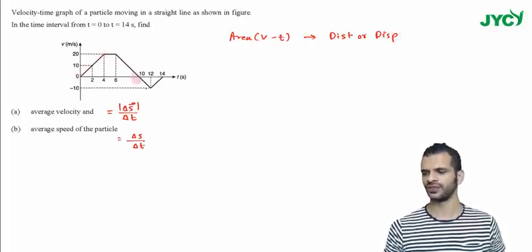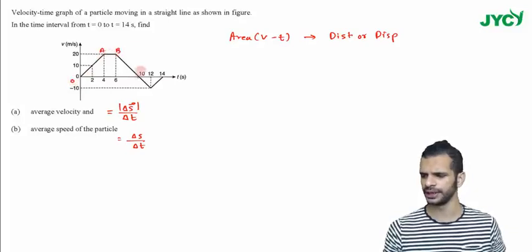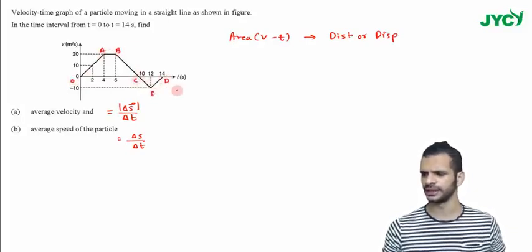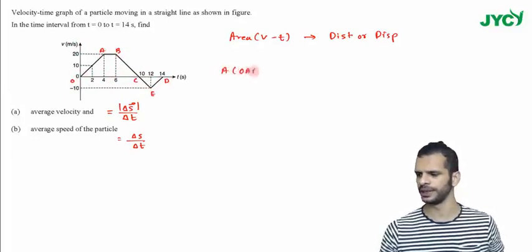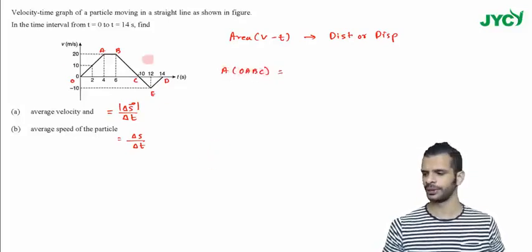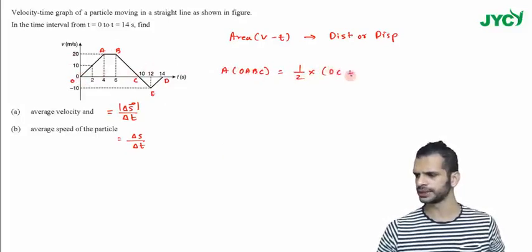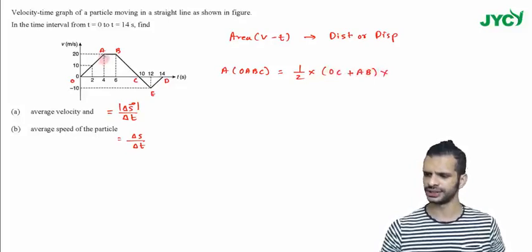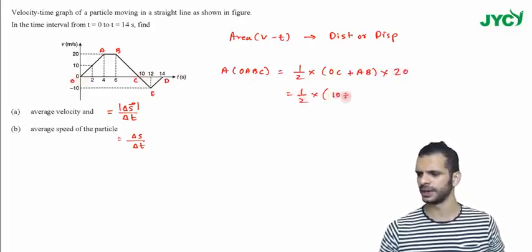So area of VT graph gives me distance or displacement. Area of VT graph is here now trapezium. Area of trapezium OABCD is OC plus AB into height, which is, let's say this height here is I can write 20. So height here is 20. Half into OC, OC is 10 plus AB is...